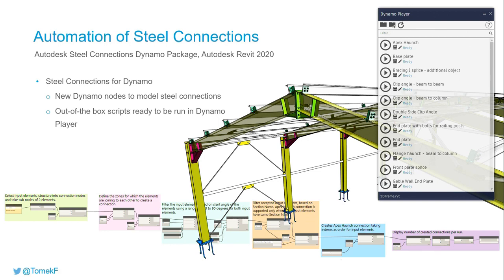Dynamo can insert your connections automatically to your steel. It enables Dynamo to control steel connection creation, streamlining the modeling of steel buildings in Revit. It can identify similar geometrical conditions for placing standard and custom connections.